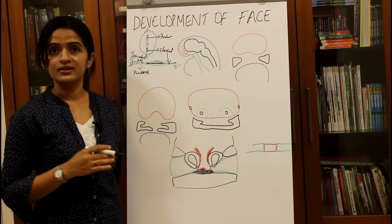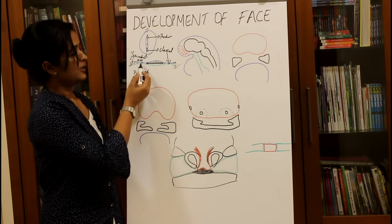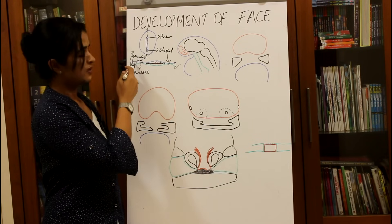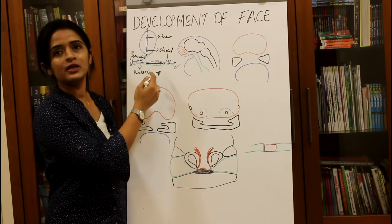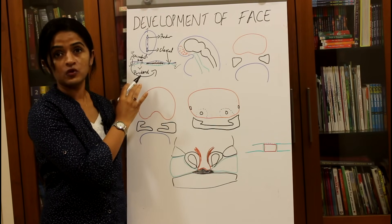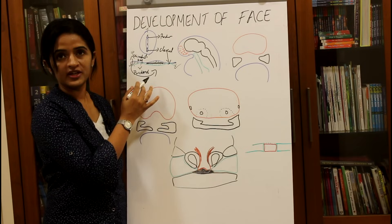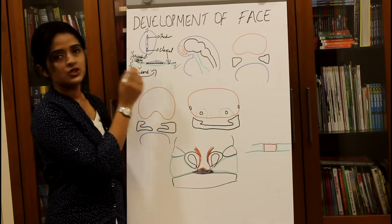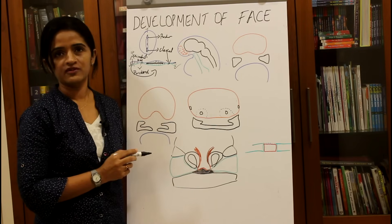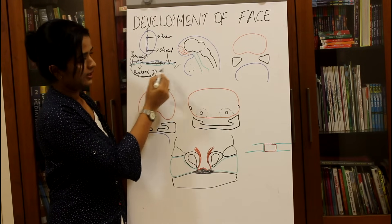By the end of the third week, the embryonic disc is just in the form of a disc. If it continues like that it would be odd because the mouth would be here and above the mouth you'd have the heart. In order to bring the pericardial region into the adult position, there should be folding of the embryo. This folding at the cephalic end is called cranial or cephalic folding. The pericardial bar will bend and come to lie in the position of the future heart.